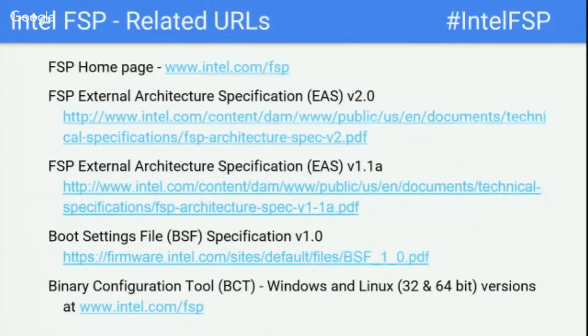Additional links to intel.com/FSP include training videos and other resources. The FSP 2.0 spec and FSP 1.1a addendum are published, along with the BSF spec at firmware.intel.com. BCT tool in both Windows and Linux versions is available for download from intel.com. There is also a hashtag for those interested in following on Twitter.